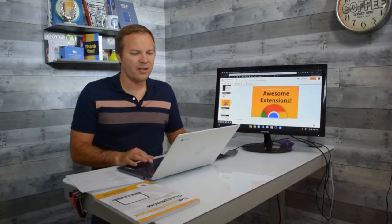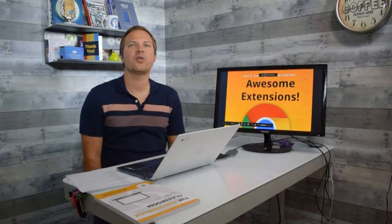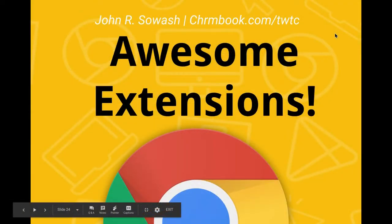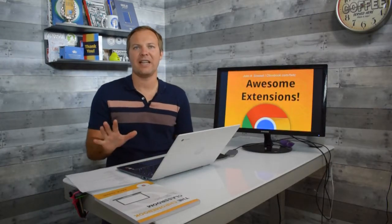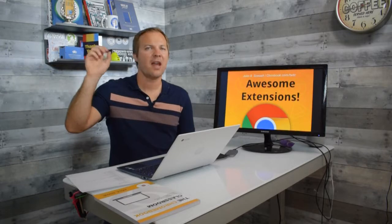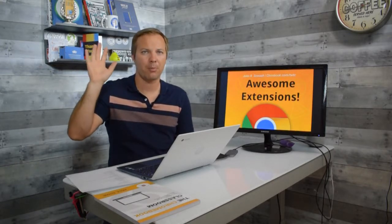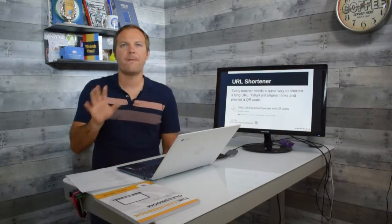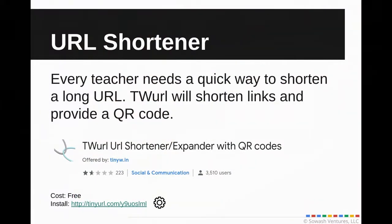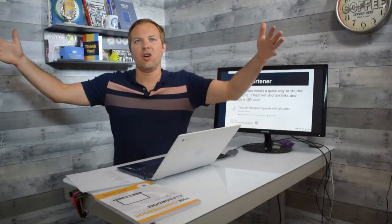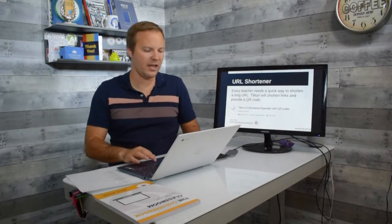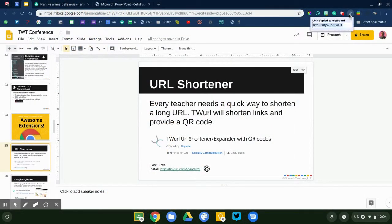Let's move on to extensions. I'll share five awesome extensions quickly without full demos. Extensions are little utilities that sit in the top right corner of your Chrome browser and do helpful, productivity-focused things. The first one I'd highly recommend is a URL shortener. If you want to send someone a very long web link, this extension with a single click will shorten it into something manageable to type or copy into a document, presentation, or email. It also provides a QR code.